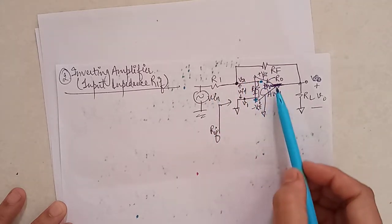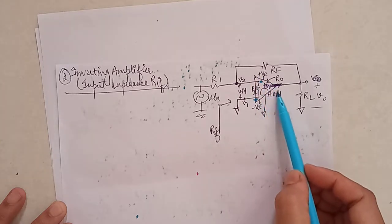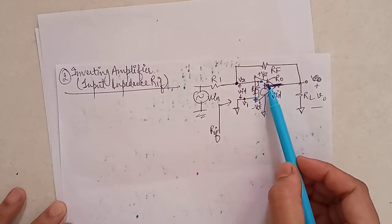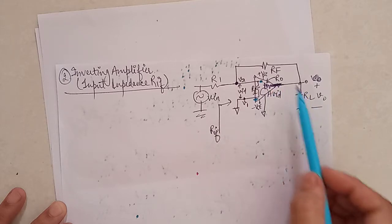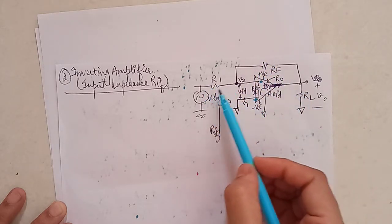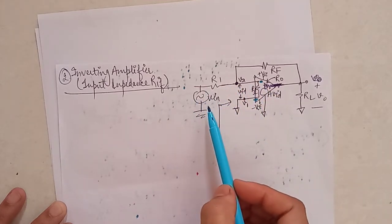And this is the internal circuit here where RI is the input impedance of this amplifier, AVID is the voltage, and this R note value is the output resistance. RL is the load, RF is the feedback resistance, R1 is the input resistance at the inverting pin, and V input is the input signal which is applied here.